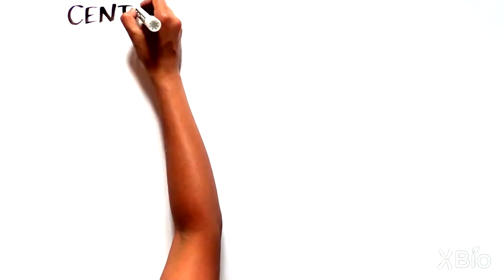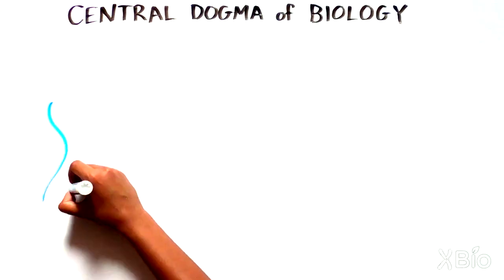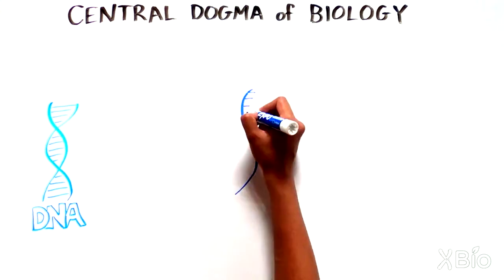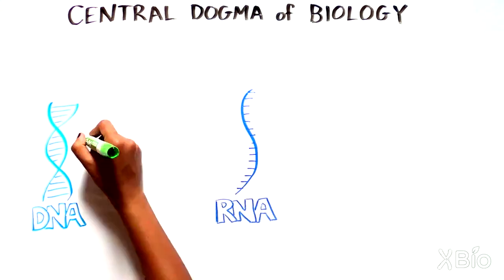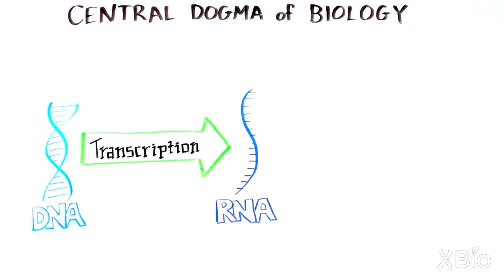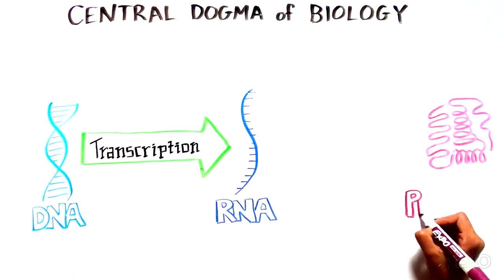Have you ever heard of the central dogma of biology? It's the concept that genetic information stored as DNA gets turned into RNA, a process called transcription, which gets turned into protein.